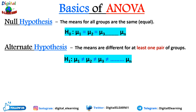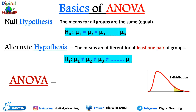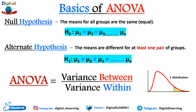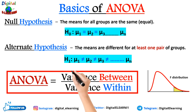If any group mean is significantly different from the overall mean, the null hypothesis is rejected. ANOVA uses the F-test for statistical significance. The F-test comprises the variance between groups divided by the variance within groups. If the variance within groups is smaller than the variance between groups, the F-test will find a higher F-value, making it more likely that the observed difference is real and not due to chance.